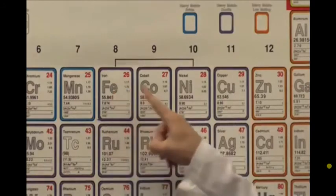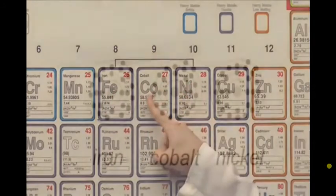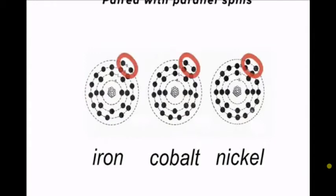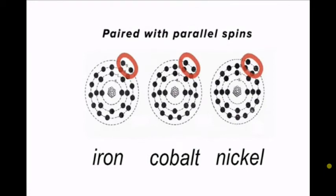And this only occurs naturally for iron, nickel and cobalt, because these atoms have an unusual double valence in which their two valence electrons are paired with parallel spins, a very rare circumstance indeed.